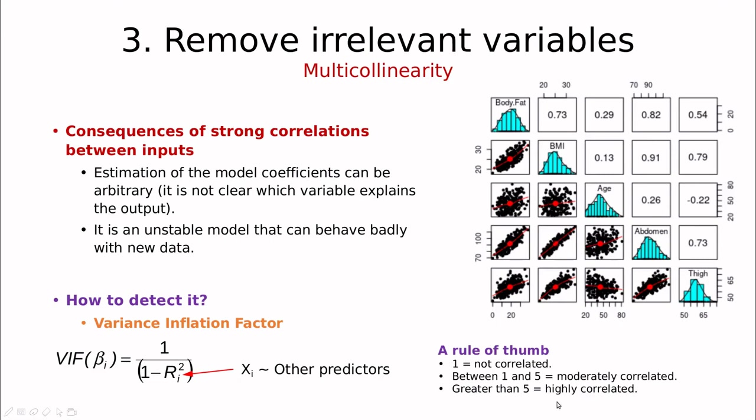So as a rule of thumb whenever we are between 1 and 5 this is moderately correlated so we could keep both parameters, but anything greater than 5 are highly correlated so maybe we should consider removing those predictors.